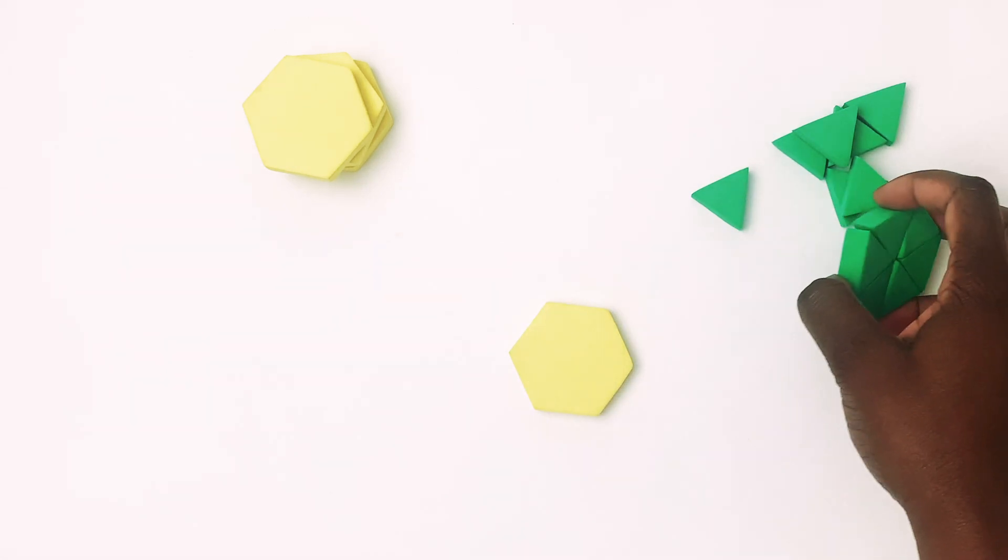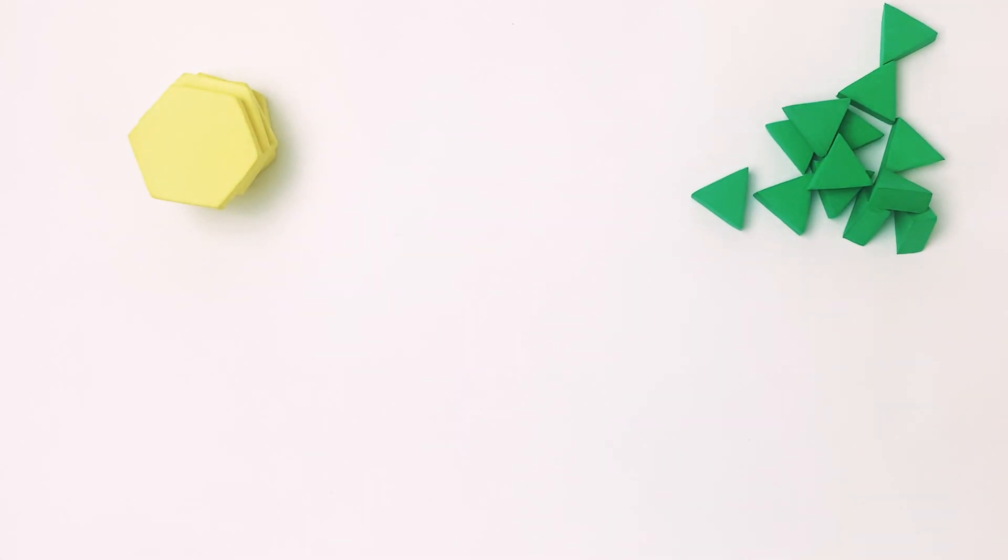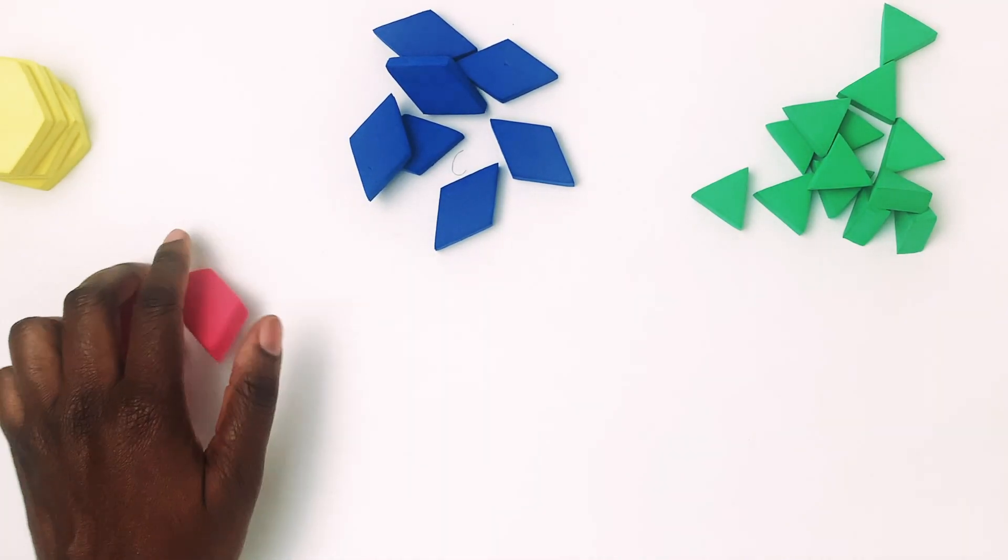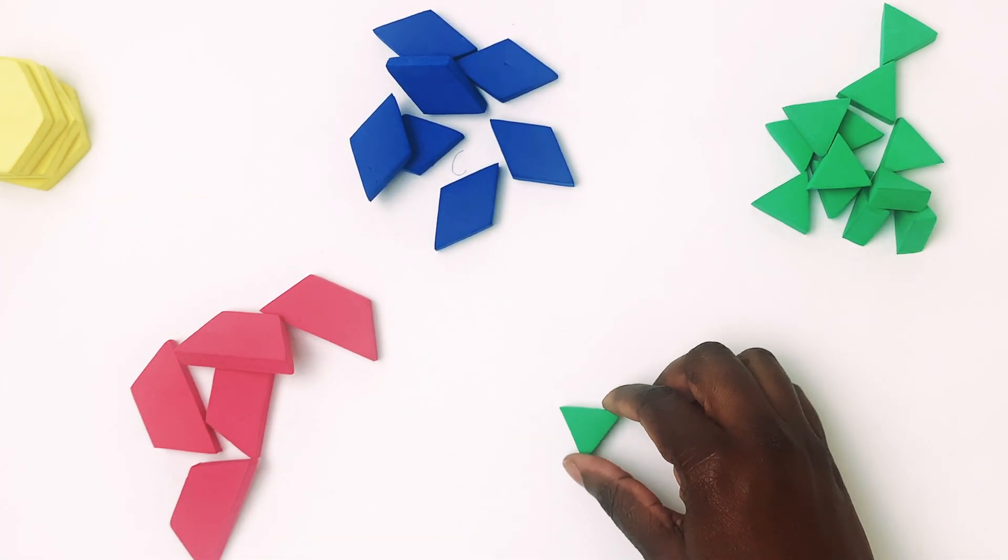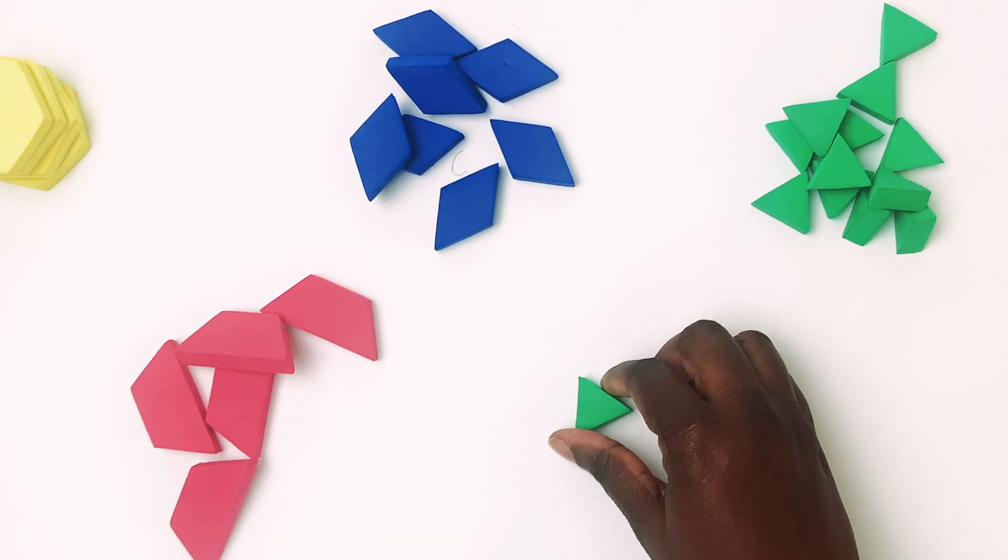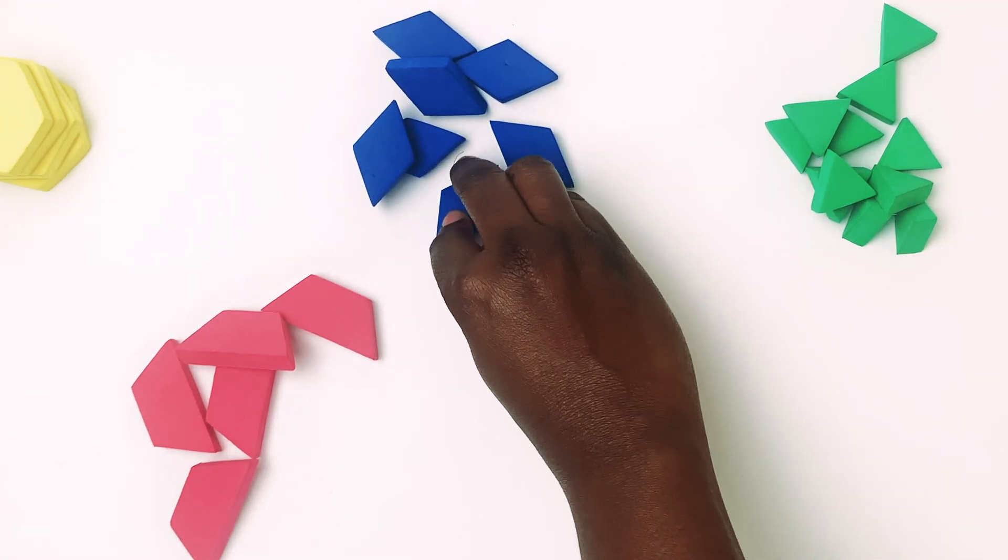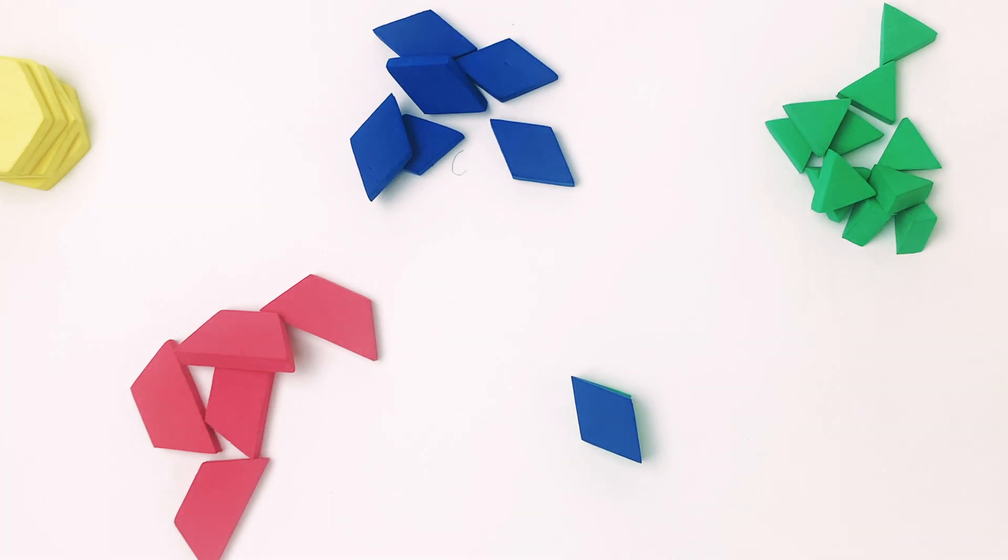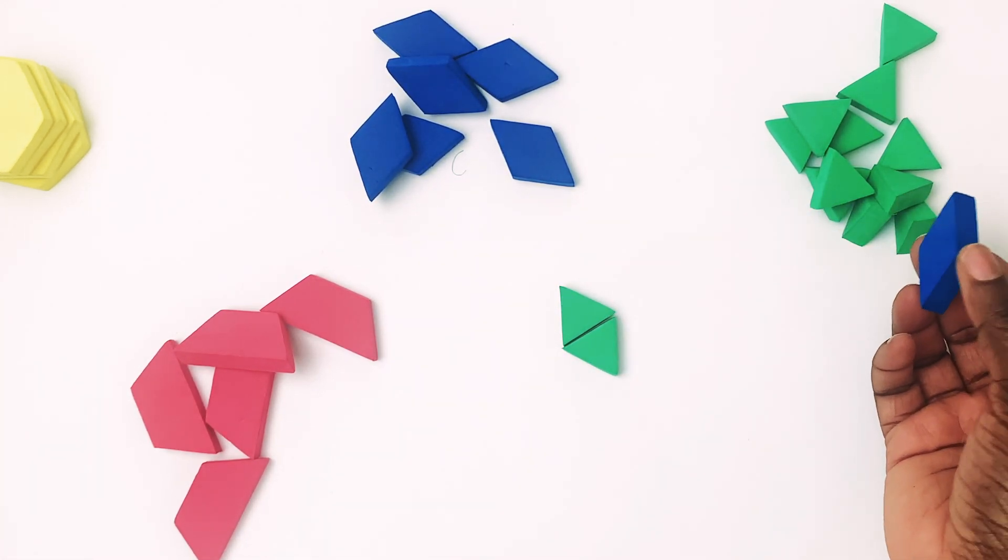So now what we're going to do is we're going to see if we can combine all the different shapes. Maybe we can use triangles to make a rhombus, or maybe we can use trapezoids to make a rhombus. I got two triangles here, and let me see. Those two triangles also create one rhombus. Look at that. Fits perfectly.